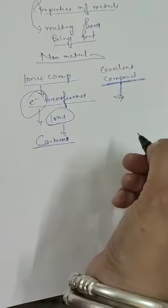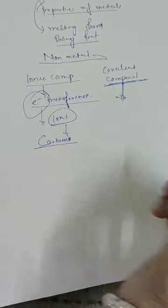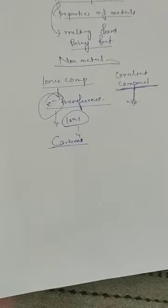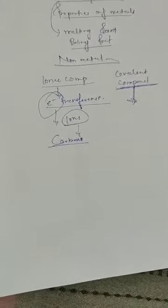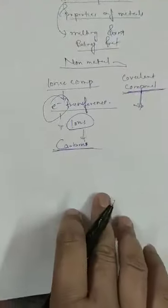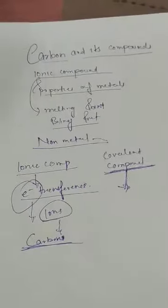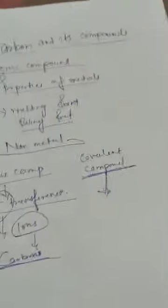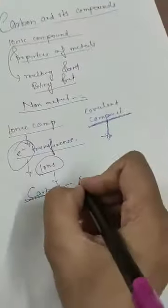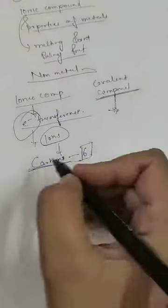Why does carbon show the formation of covalent compounds? Carbon is a unique element. Its atomic number is 6. First, let us discuss what a covalent compound is.